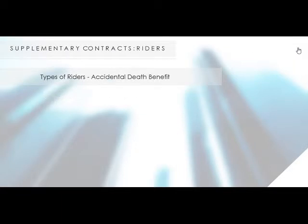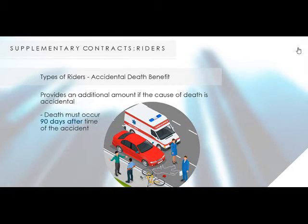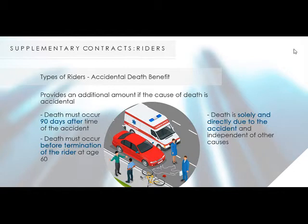Types of Riders: Accidental Death Benefit. This provides an additional amount if the cause of death is accidental. Before claims can be paid under this supplement, there are conditions that must be met. Death must occur within 90 days after the time of the accident — the longer the period before death occurs, the more difficult it is to prove it was solely caused by the accident. Death must occur before termination of the rider at age 60, and death must be solely and directly due to the accident and independent of other causes. The company may determine the true cause of death.